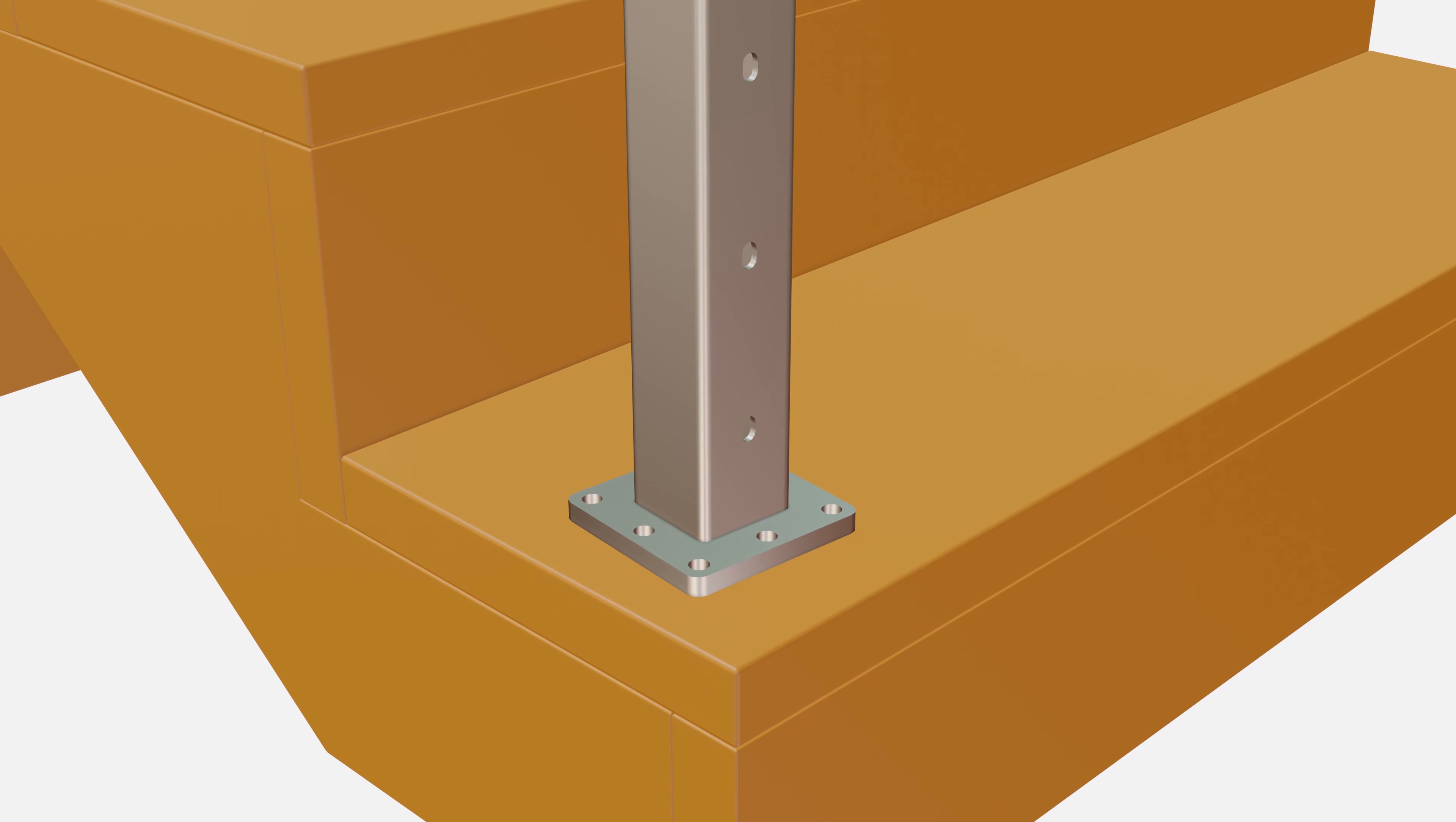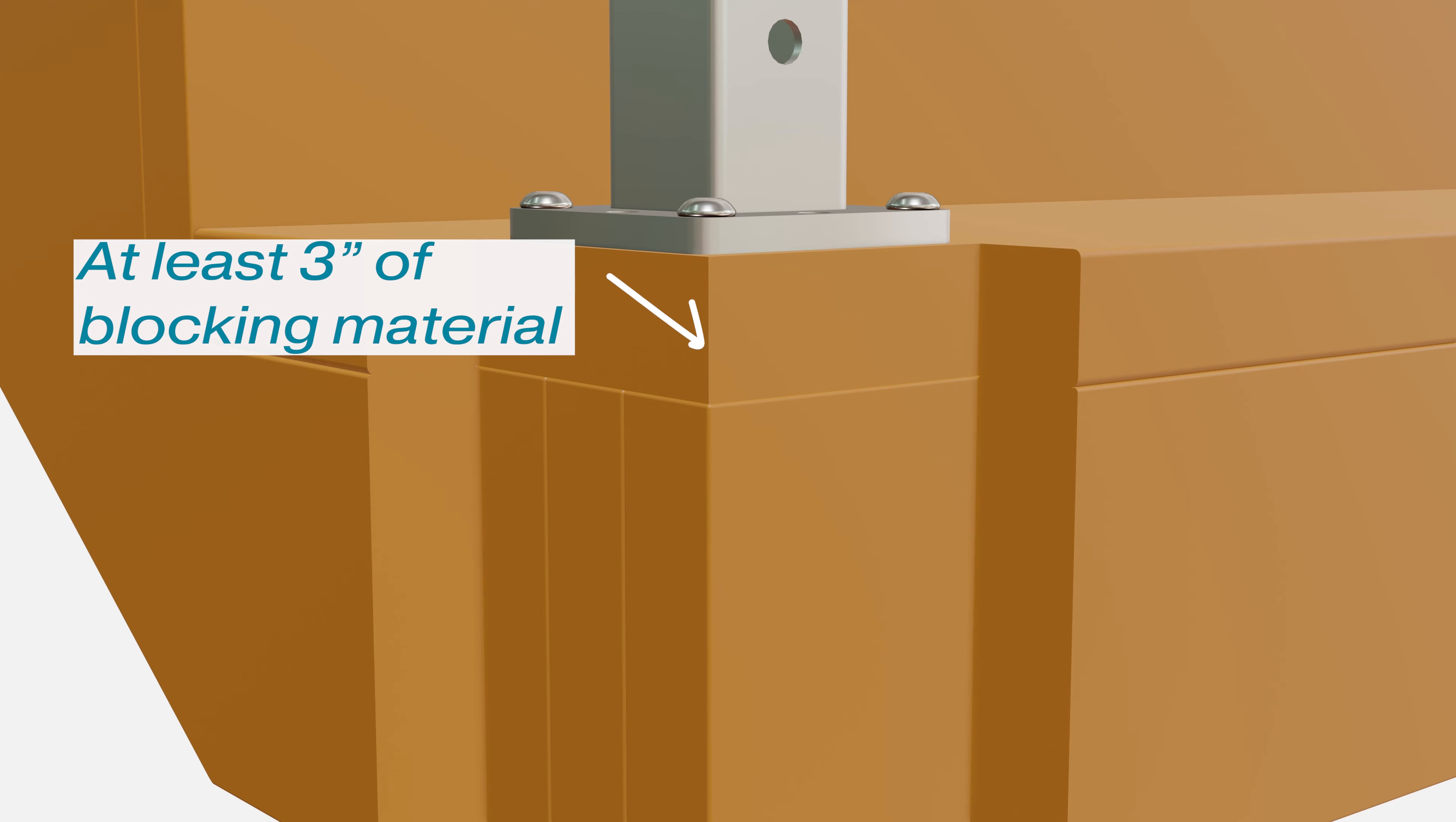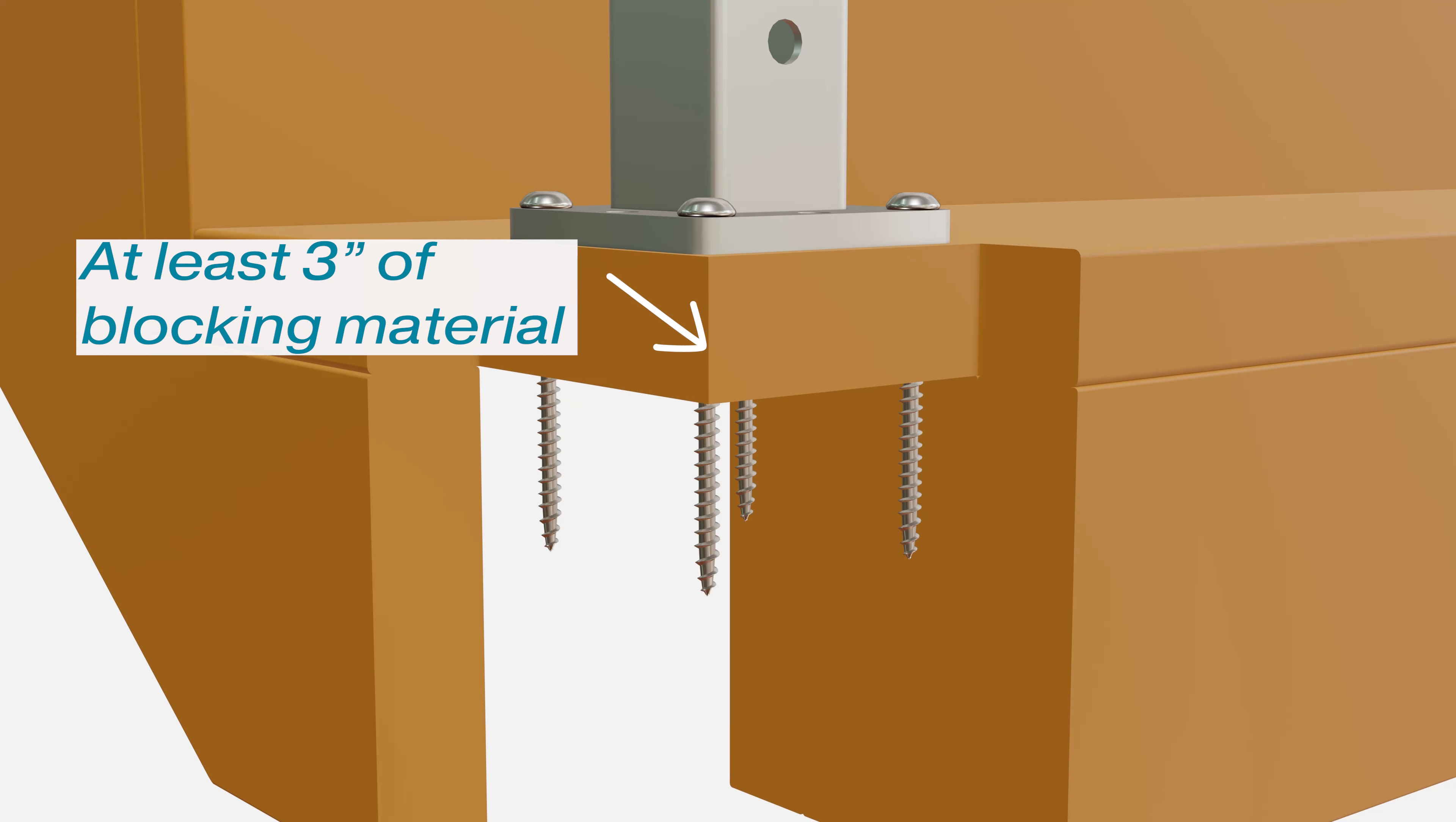Unless otherwise specified, the post should sit just behind the tread nosing. Your post mounting holes should always be over solid blocking and never over empty space.